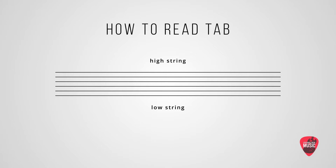Your string names go E, A, D, G, B, E. And your string numbers go 1, 2, 3, 4, 5, 6. So string number 1 is high E, and string number 6 is low E.